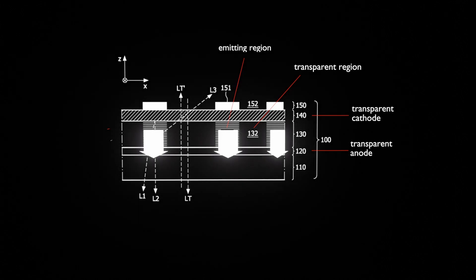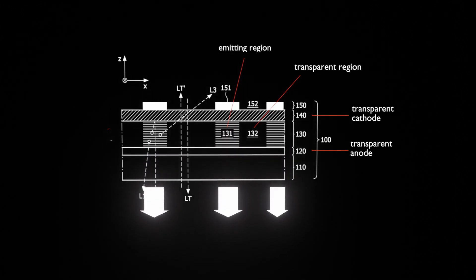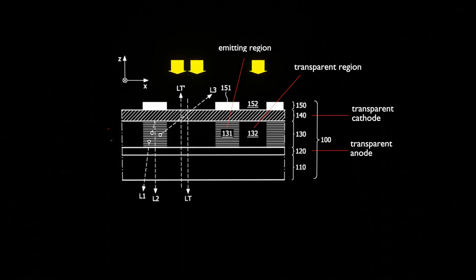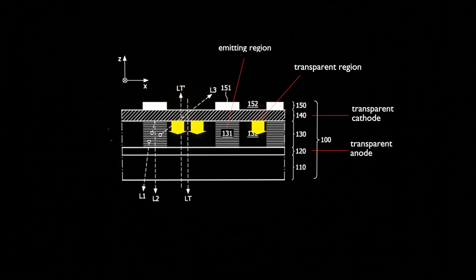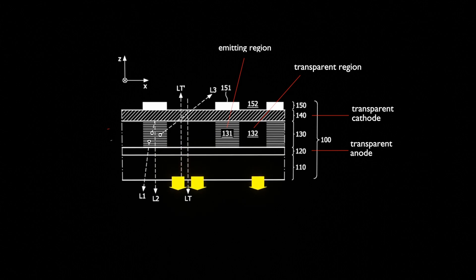A part of the panel consists of pixels that emit light to compose an image, and the other part is composed of a part with high transmittance so that the object on the other side can be seen without a light-emitting function.